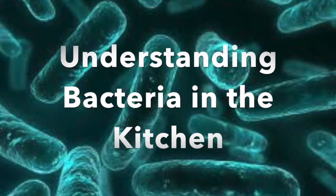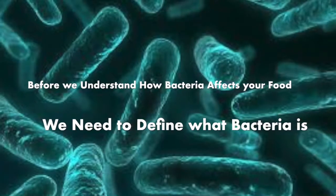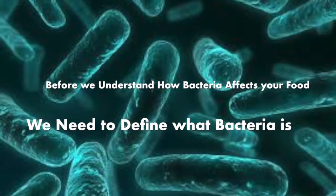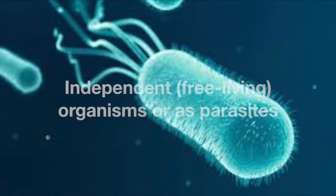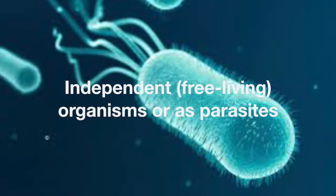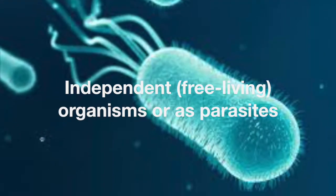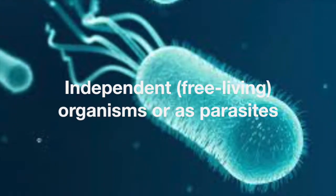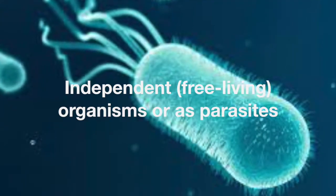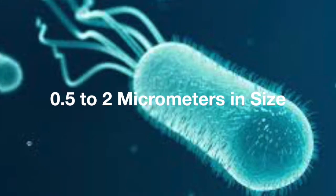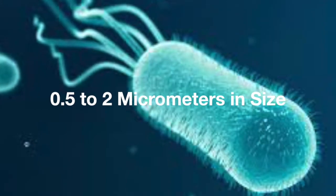Welcome to the course on understanding bacteria in the kitchen. Before we can understand how bacteria affects your food, we need to define what bacteria is. Bacteria is a single-celled microorganism which can exist either as an independent, free-living organism, or as a parasite, meaning it is dependent upon another organism for life. They are about 0.5 to 2 micrometers in size.